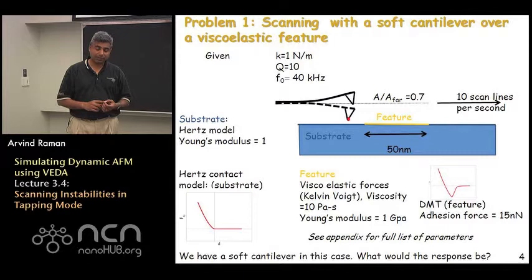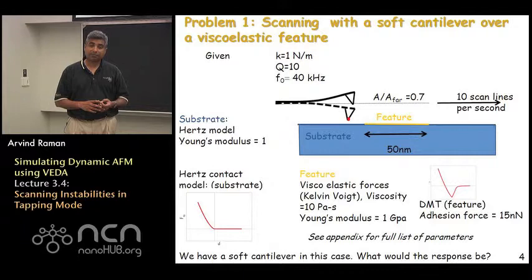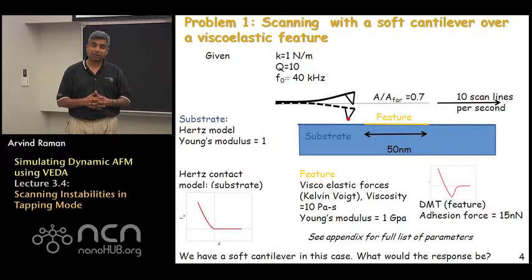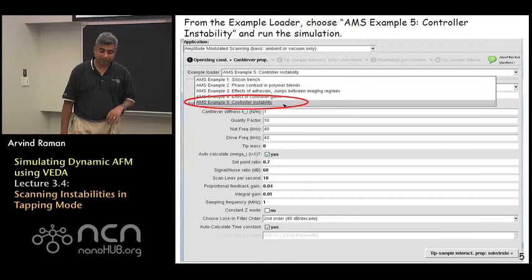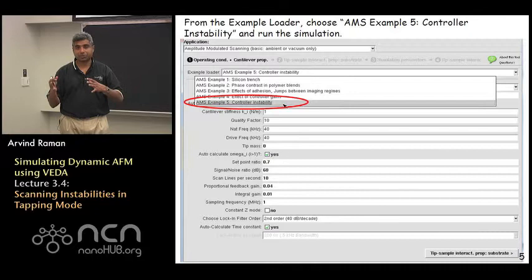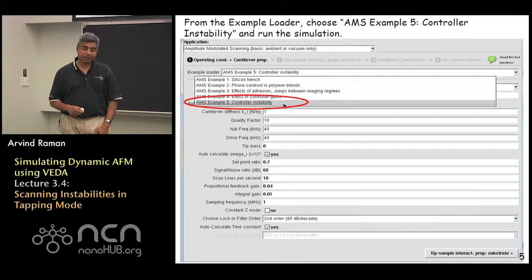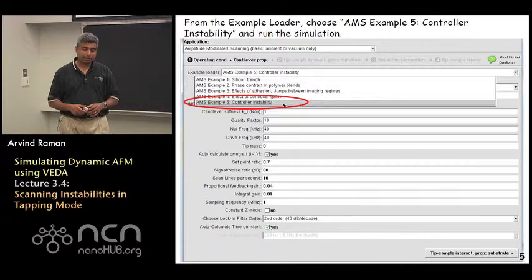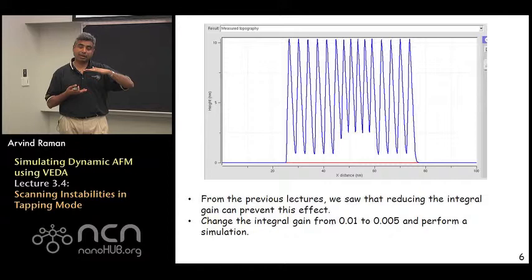And we want a set point ratio of 0.7, so 70 percent, and we are going to scan fast at 10 scan lines a second. And the amplitude far from the surface is 6 nanometers and we would like to understand how we are able to scan this nominally flat sample. So if you go to VEDA and choose example number five which is controller instability, all these parameters and feature properties are already loaded. So you pretty much have to just change the feedback controller, the proportional gain and the integral gain if you need to. And then hit the top right button to simulate and the probe actually approaches the sample on the substrate, reaches the desired set point amplitude and then starts scanning, goes over the feature and tries to go over the feature.